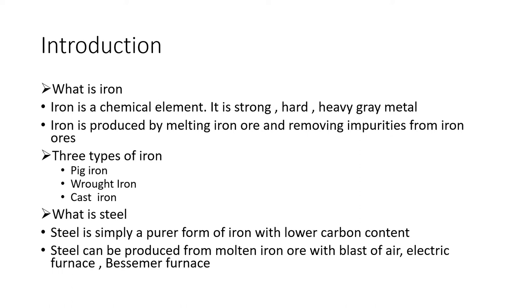What is iron? Iron is a chemical element. It is strong, hard, and a heavy grey metal. Iron is produced by melting iron ore and removing impurities from iron ores. There are three types of iron: pig iron, rod iron, and cast iron.